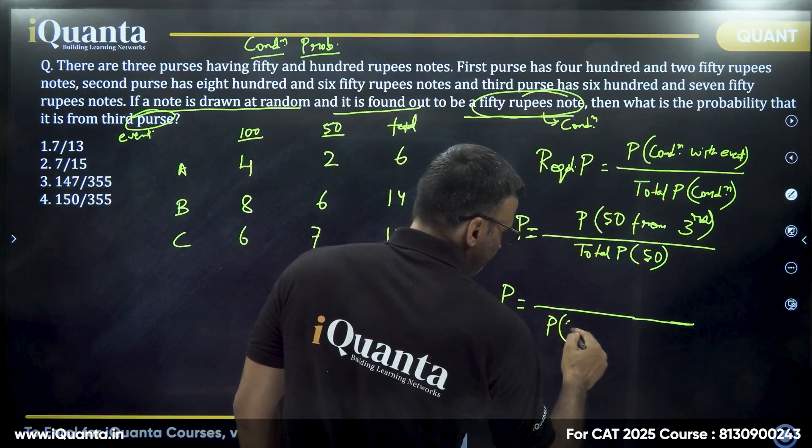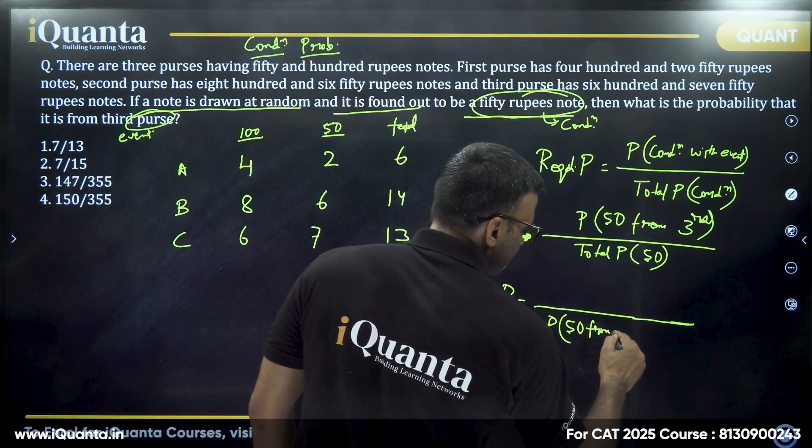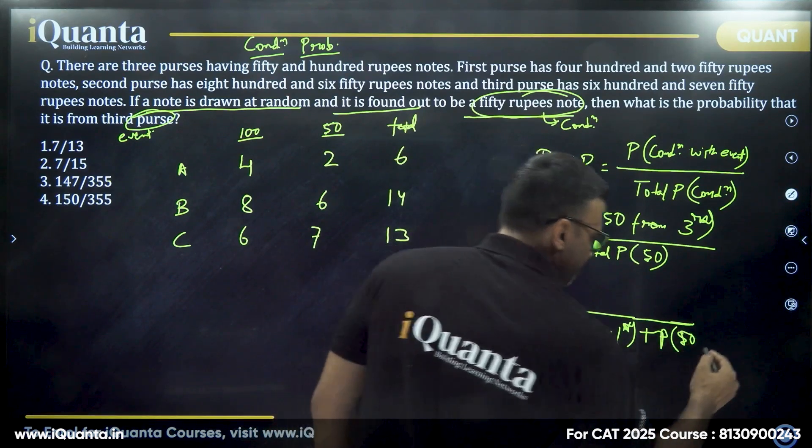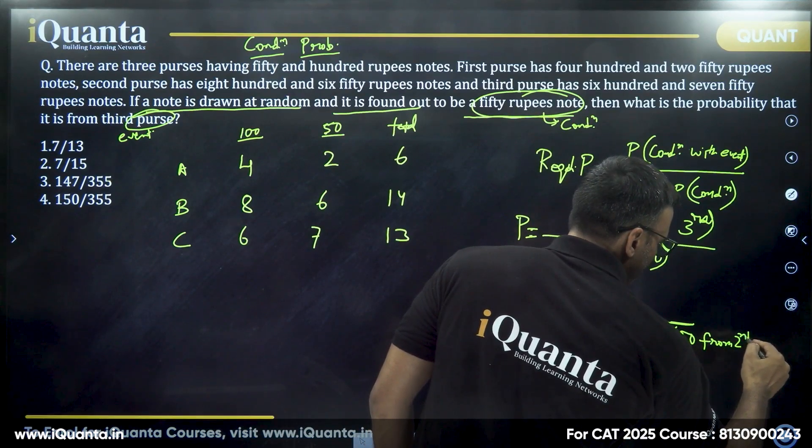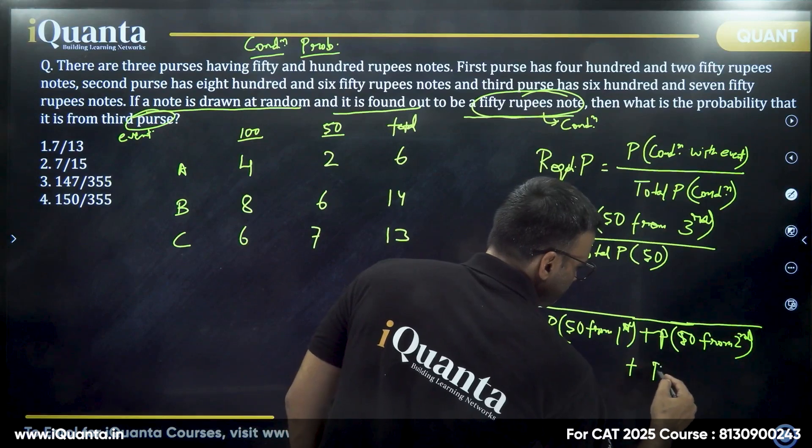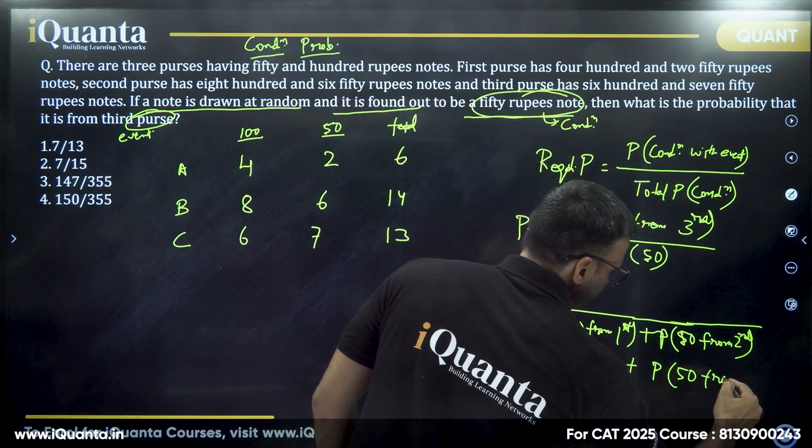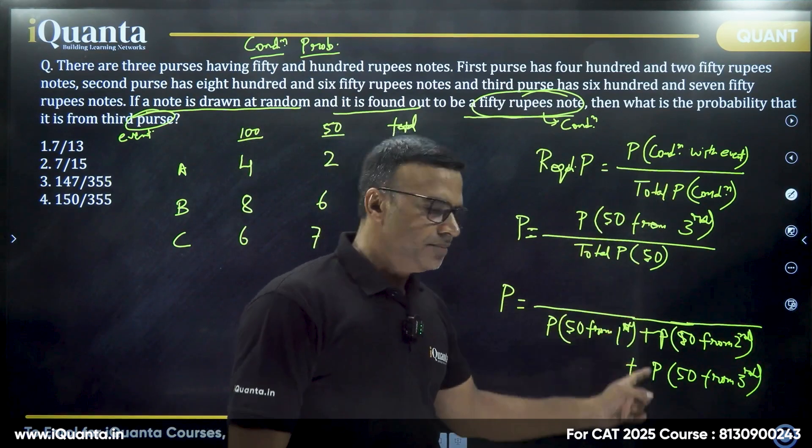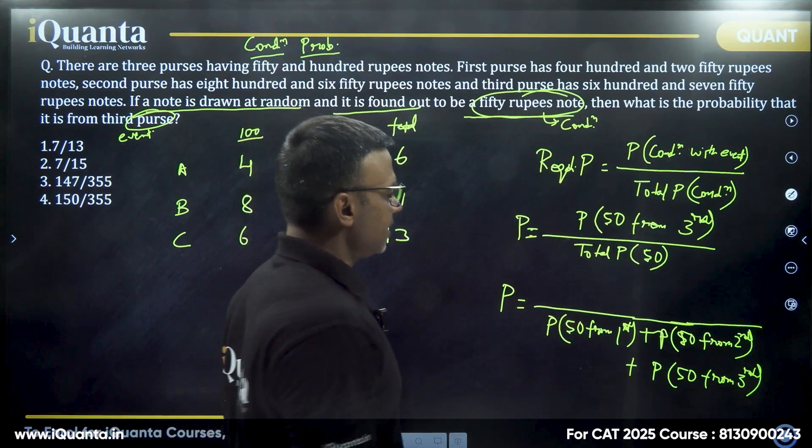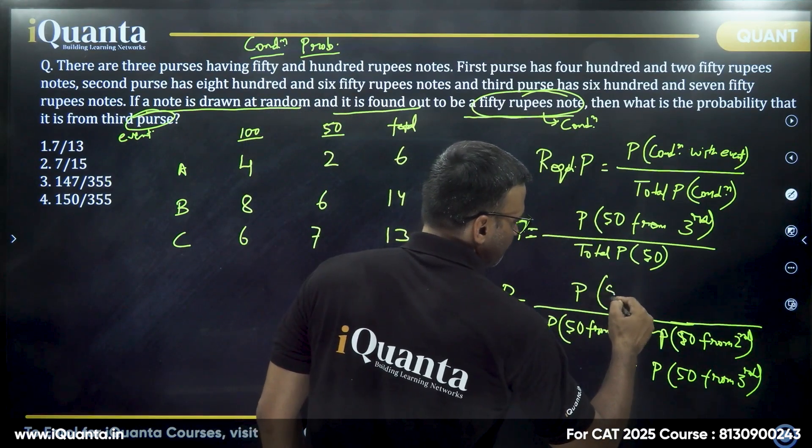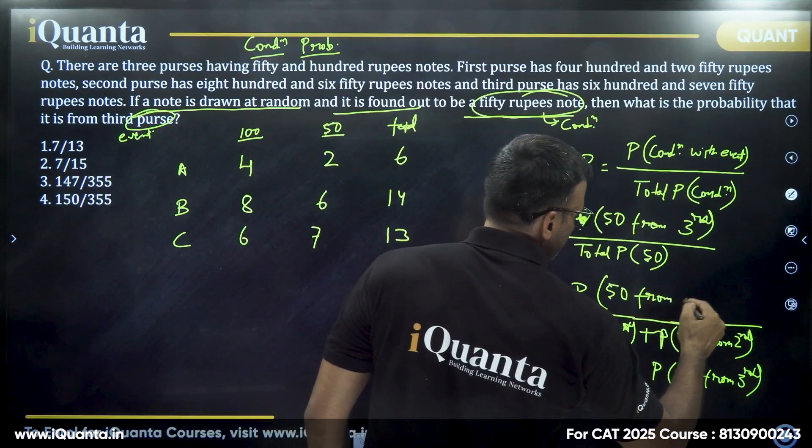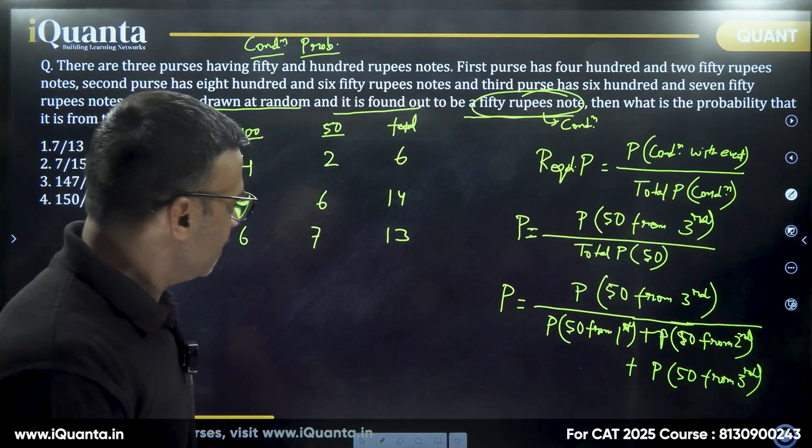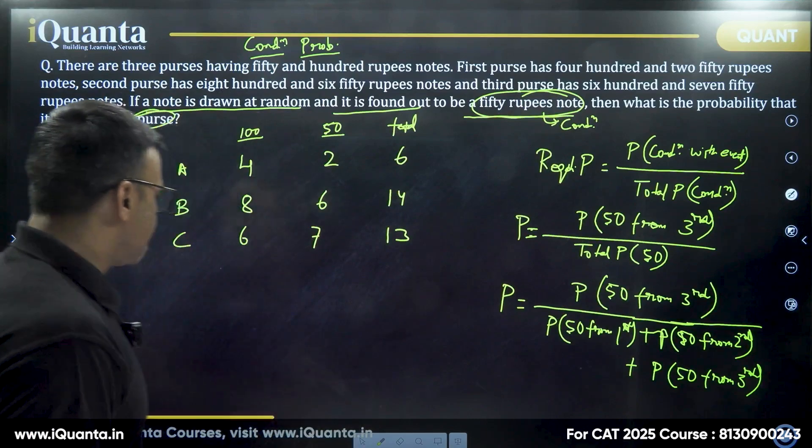Total probability of 50. It means probability of 50 from first plus probability of 50 from second, then probability of 50 from third. This is the simple verbal complete explanation of the probability of the condition. One of these cases that is asked in the question will come in numerator—probability of 50 from third. So in the exam, if you have studied this entire topic, you will not write all this, you will start straight away with the answer.